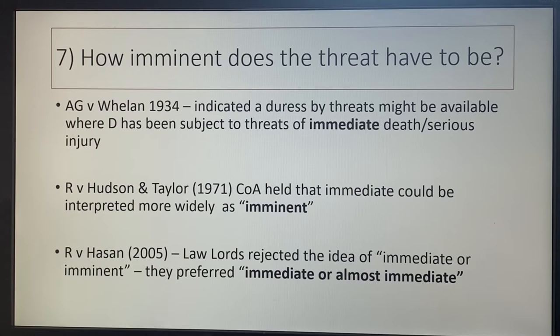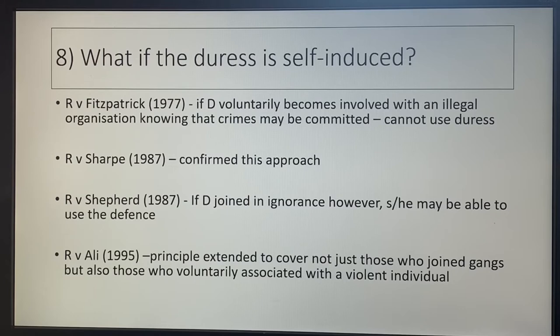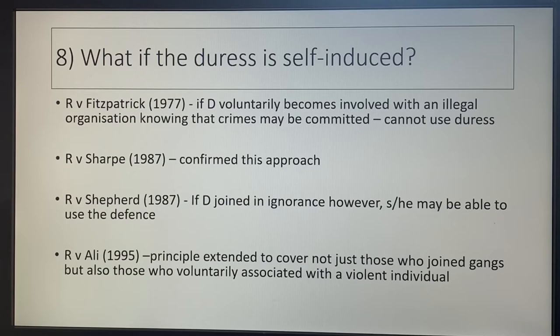Number eight: what if the duress is self-induced? In RV Fitzpatrick, he joined the IRA and they said they would kill him and his mum unless he took part in a robbery. The law here was: if the defendant voluntarily became involved with an illegal organisation, knowing the crimes they committed, they couldn't use duress — it was self-induced. You got yourself into it; you knew they were going to commit these sort of crimes. RV Sharp confirmed this approach, where he took part in an armed robbery based on a threat of death or serious harm.